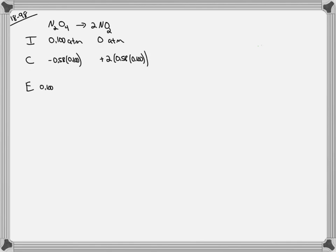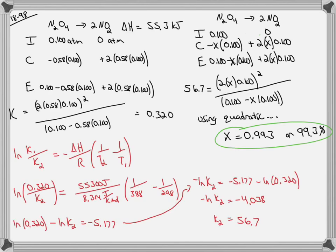So at equilibrium we will have 0.1 minus 0.58 times 0.1. This will be the final pressure of dinitrogen tetroxide at equilibrium. And this will be the final pressure of nitrogen dioxide, 2 times 0.58 times 0.1.